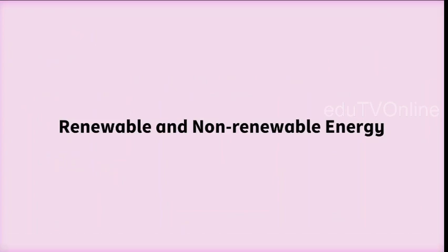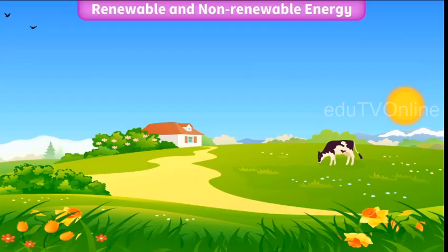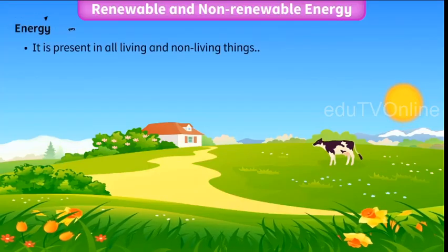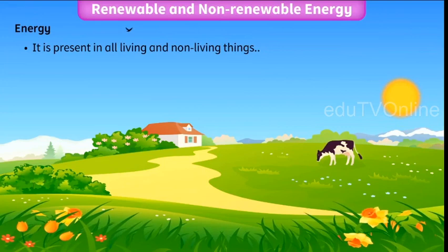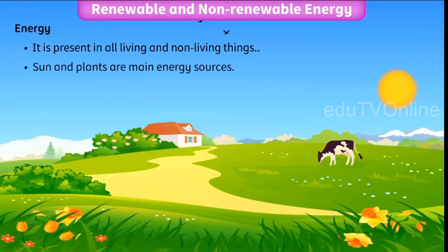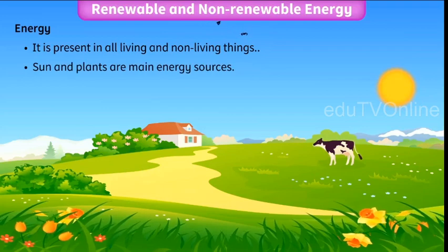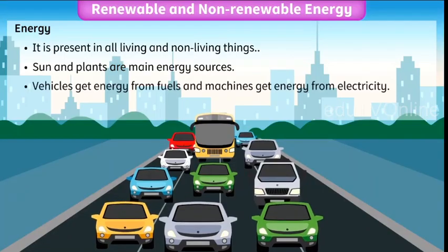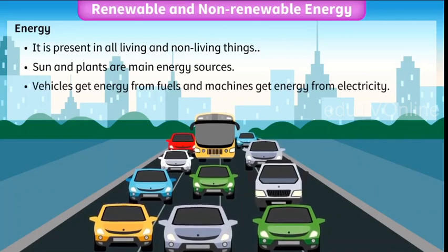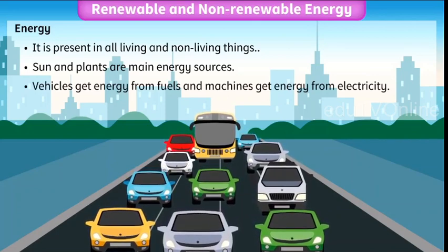Renewable and non-renewable energy with examples. Energy is present in all living and non-living things in different forms. Human beings and animals get most of their energy from plants, and plants get their energy from the sun. Vehicles move because of the energy they get from fuels.